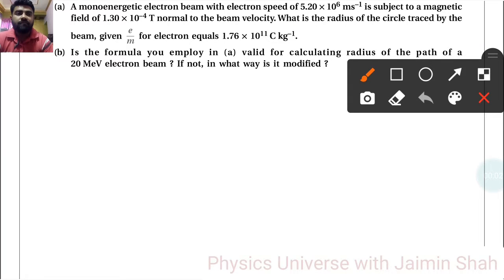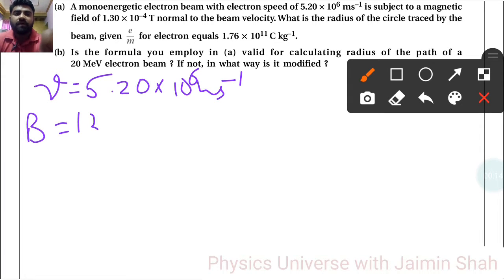A monoenergetic electron beam with electron speed v = 5.20 × 10⁶ m/s is subjected to a magnetic field B = 1.3 × 10⁻⁴ T normal to the beam velocity. What is the radius of the circle traced by the beam?